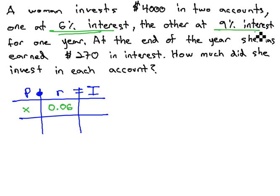The other account, we don't know how much is in it either, so we will label it y, but its interest rate is .09, changing that percentage to a decimal.